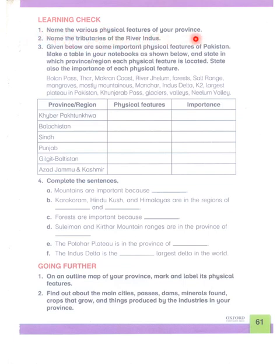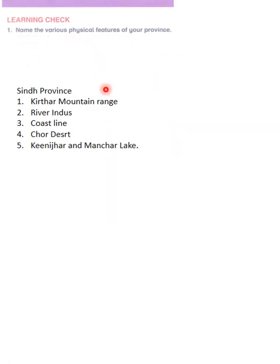Name the various physical features of your province. I don't know which province you are from, but I'll take the example of two provinces — Punjab and Sindh — and tell you what the features are. I'll give you a few features; you may add more. I advise you to study more and think about your own province.